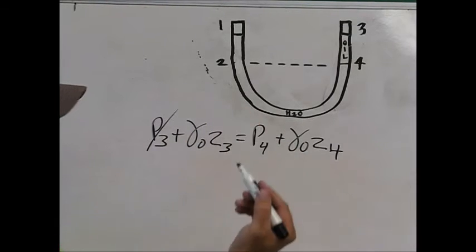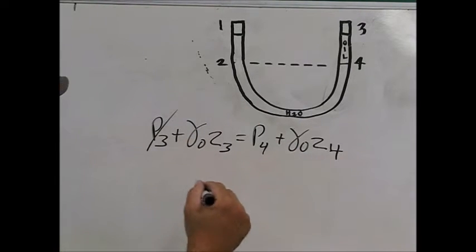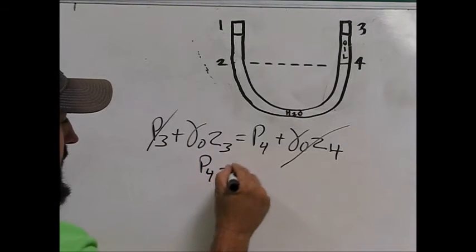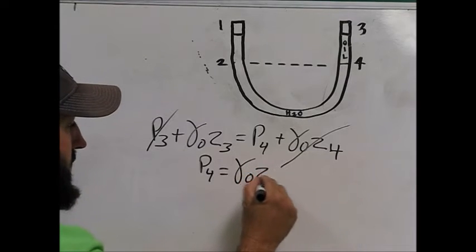There are some things that can be cancelled out here because the pressure at 3 is 0. Z4 is at our dashed line which we set as our datum, so that's 0, so that can be cancelled out. It ends up with the pressure at 4 being equal to the gamma of the oil times Z3.